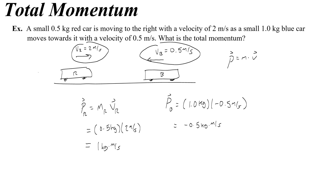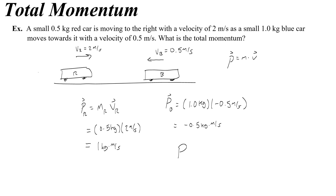This could be a snapshot right before the two cars collide. If I wanted to find the total momentum at this moment, right before they collide, all I need to do is add those two numbers together. I'll call this p₀ for momentum in the beginning. I would have 1 kilogram meter per second minus 0.5, giving me a total of 0.5 kilogram meters per second.